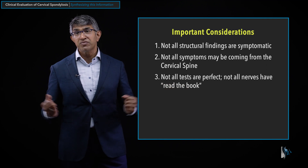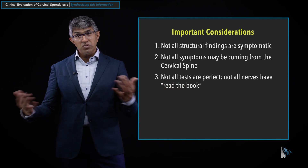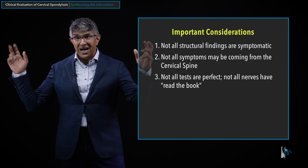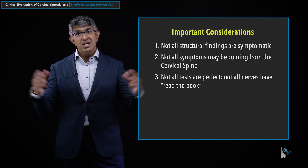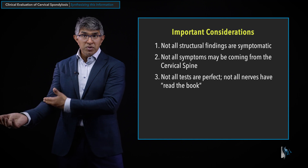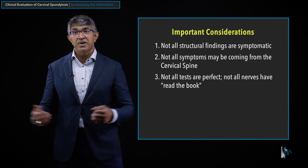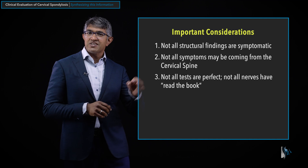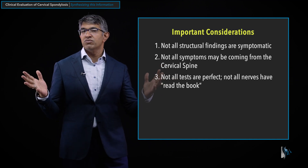Number three: not all tests are perfect. Sometimes people's symptoms don't read the textbook — a C6 radiculopathy may present differently from the classic pattern, the brachioradialis reflex may be preserved when you'd expect it not to be, or an EMG finding may implicate C7 when the clinical picture suggests C6. Putting all this together requires tolerance for the fact that these tests can be imperfect.